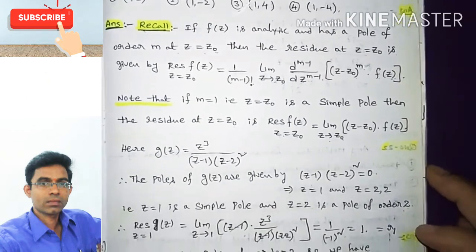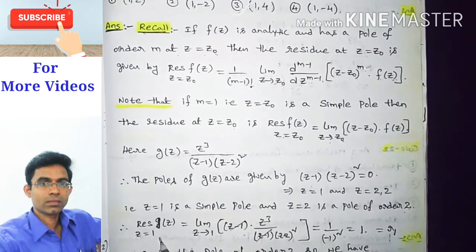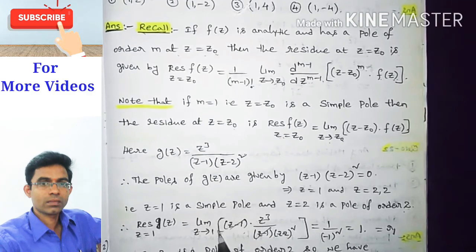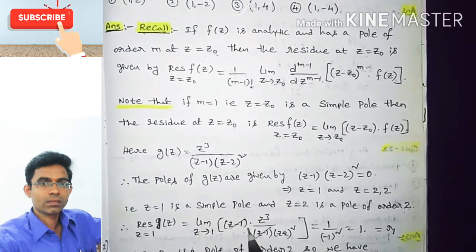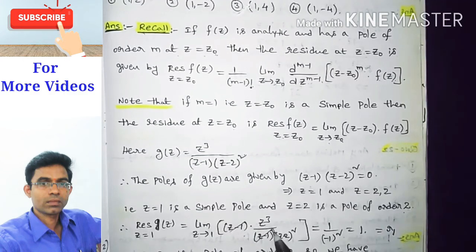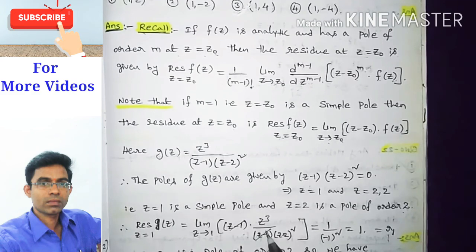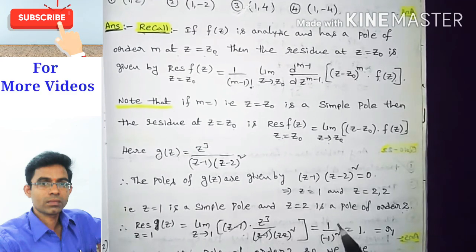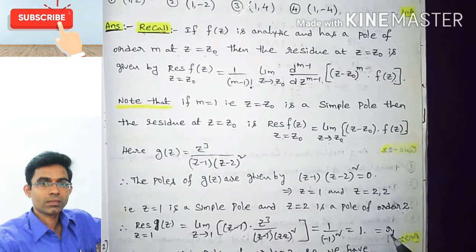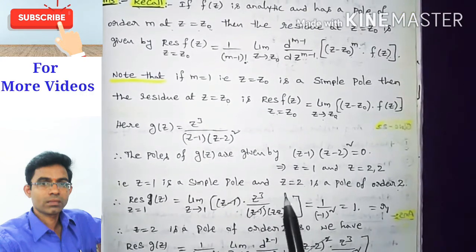Since z = 1 is a simple pole, the residue of g(z) at z = 1 is: limit as z tends to 1 of (z-1) · g(z) = limit of (z-1) · z³ / [(z-1)(z-2)²]. The (z-1) terms cancel, and substituting z = 1 gives 1 / (1-2)² = 1/1 = 1. So r1 = 1.